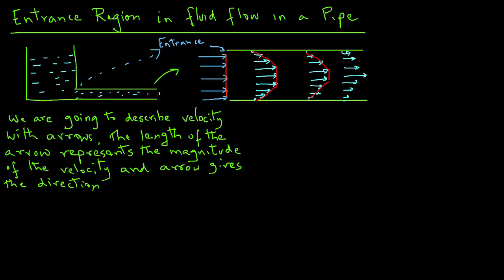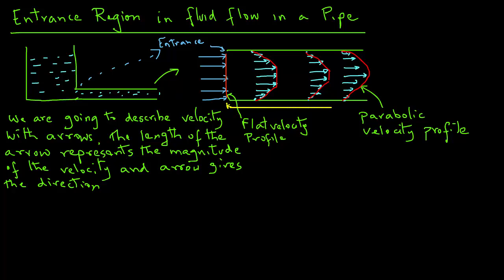You can see from this diagram that the velocity profile of the fluid in the pipe changes from as the fluid enters to somewhere towards the right hand side. This region where the profile is developing into this parabolic shape is called the entrance region.